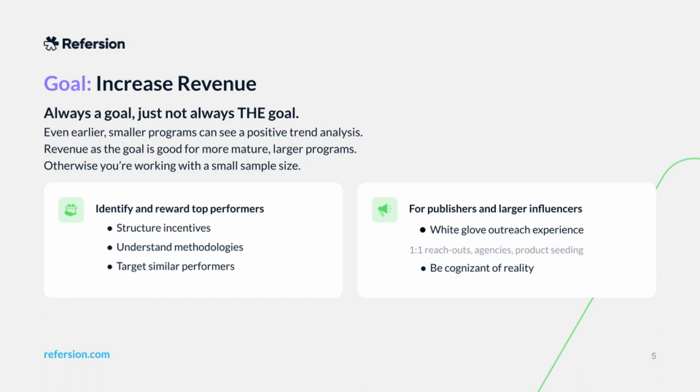When we focus on objective numbers, it's really hard to set meaningful goals if your company is brand new. Say your goal is to make a million dollars this year — without having the data to understand how you're going to get there, it's unlikely to have a goal that's achievable in a way you can really plan for. Even with small programs, if revenue is a goal — not just the main goal — you can always identify and reward your top performers and create incentives for them.